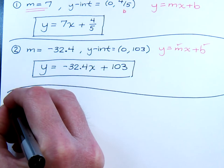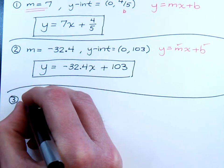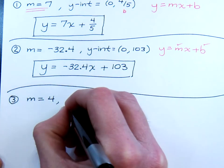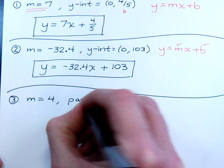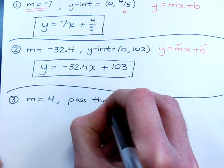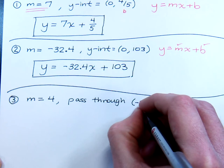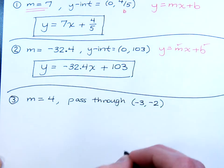So here's our third example in this series. Let's look at finding the equation for a line that has a slope of 4, and the line needs to pass through the point negative 3, negative 2.